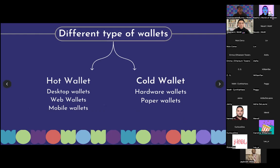Different types of wallets. We're not going to go too deep since we're talking about wallet security. You have hot wallets: desktop wallets, web wallets, mobile wallets. Then you have cold wallets: hardware wallets and paper wallets. We're not really going to talk about paper wallets. We'll get a bit into hardware wallets and desktop wallets soon.